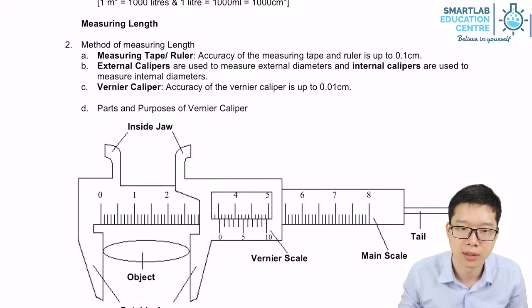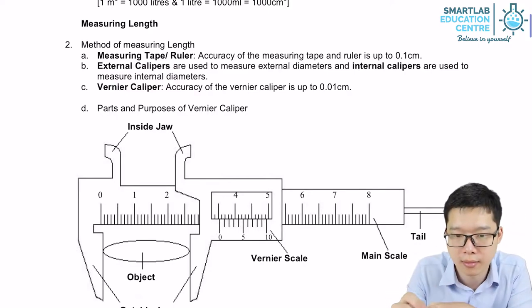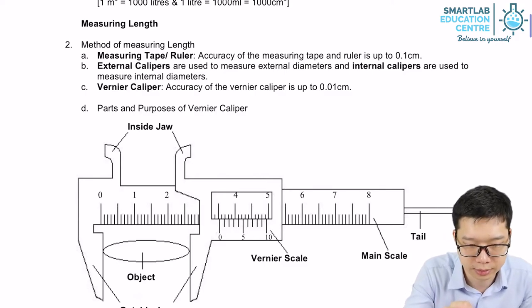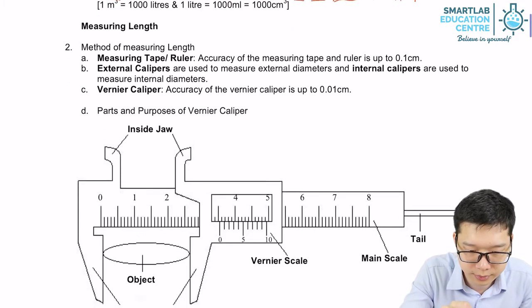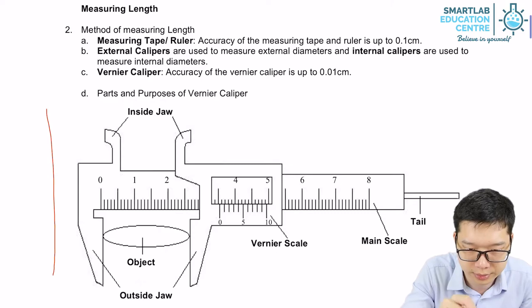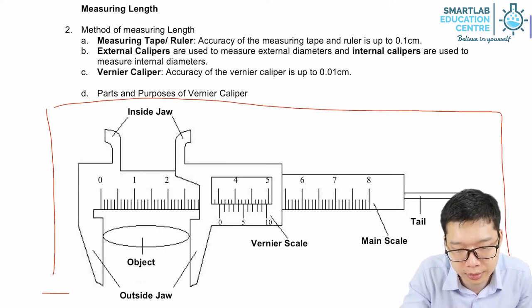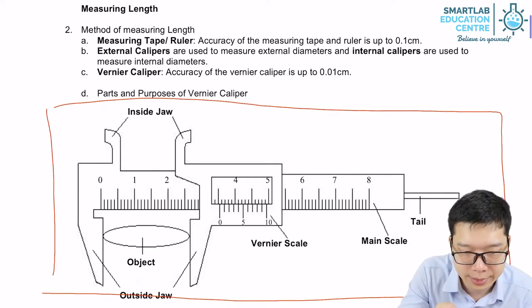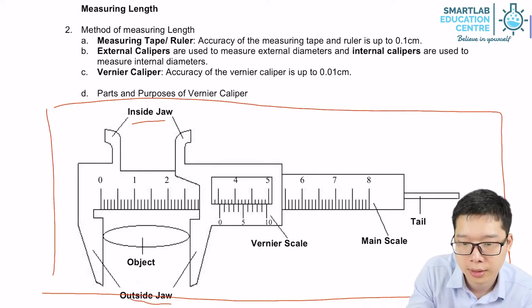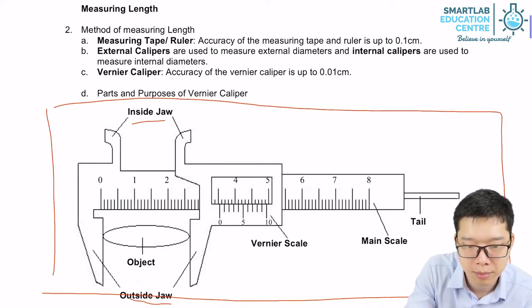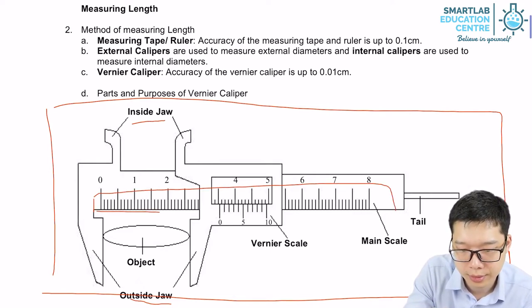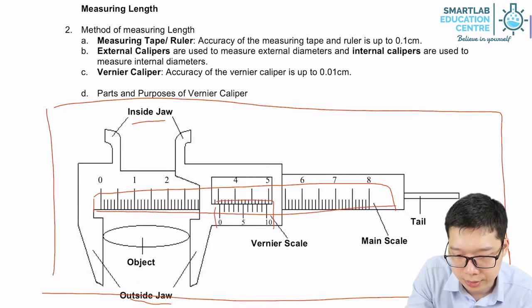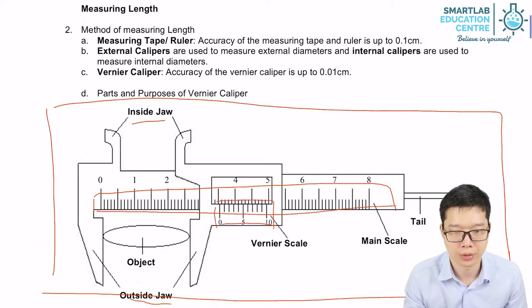The next one is the Vernier Caliper. This graph shows a top view or side view of a Vernier Caliper. It has inner jaws, outer jaws, and it has a main scale and a Vernier scale. So how do we use it?